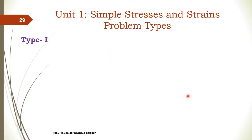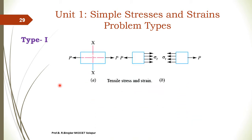Hello everyone, today we are going to see simple stresses and strain, and the different types of problems. The first type is a bar on which a load P is acting. These are very simple and basic types, and we can calculate using the formula sigma — that is, stress is equal to force acting on the component divided by the cross-sectional area.